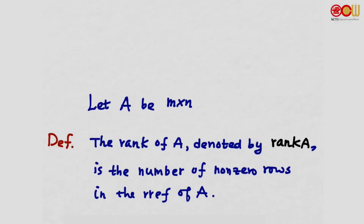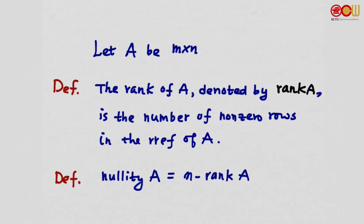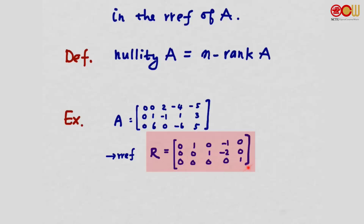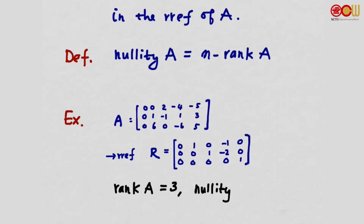We give it a special name. Let A be an m by n matrix. The rank of A, denoted rank(A), is the number of non-zero rows in the REF of A. We also define the nullity of A as n minus rank(A). For example, if A is 3 by 5 and its reduced row echelon form R is also 3 by 5, then rank(A) = 3 (the number of non-zero rows of R), and nullity(A) = 5 - 3 = 2.